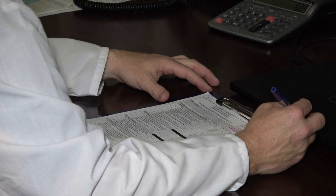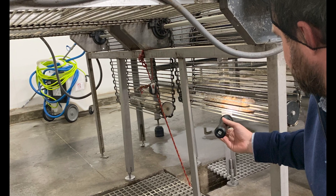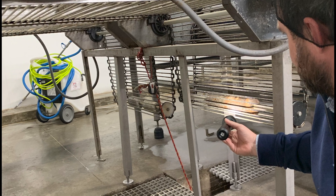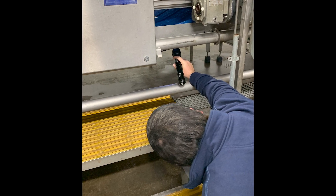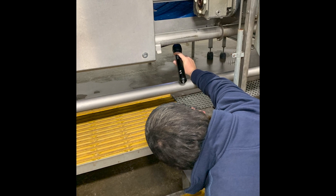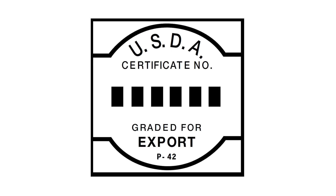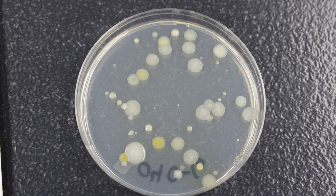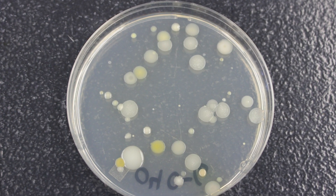AMS sanitation requirements are meant to protect the integrity of the USDA grade mark by requiring additional sanitation expectations at facilities that utilize AMS voluntary grading services. AMS inspectors will assess for voluntary grading program requirements during the pre-operational sanitation inspection and throughout processing operations by utilizing organoleptic inspection assessments. While AMS may review microbial test results as part of certain export programs, AMS does not conduct nor require swabbing or biological testing during routine sanitation assessments.